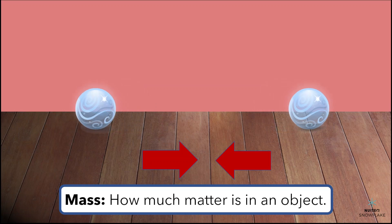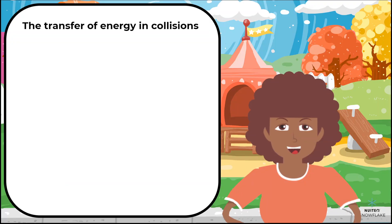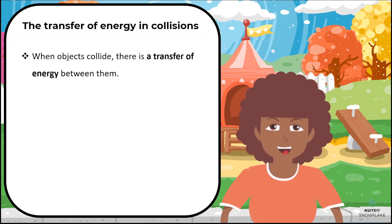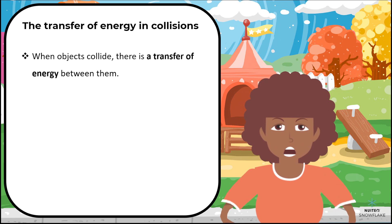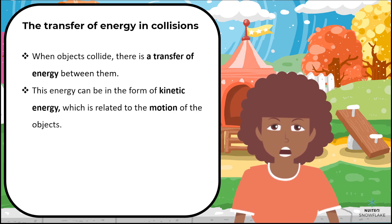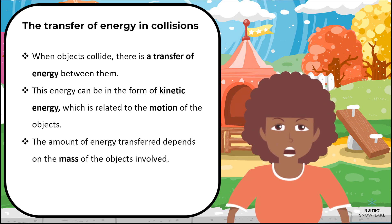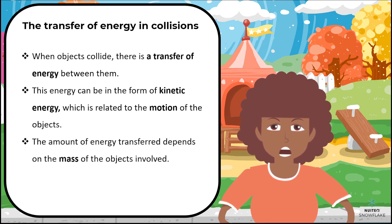In summary, when objects collide, there is a transfer of energy between them. This energy can be in the form of kinetic energy, which is related to the motion of the objects. The amount of energy transferred depends on the mass of the objects involved, which can affect the speed and direction of their motion after the collision.